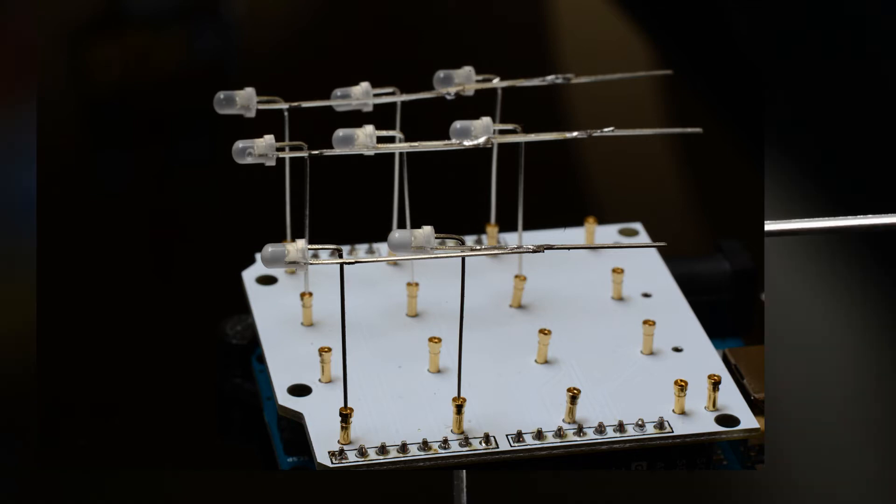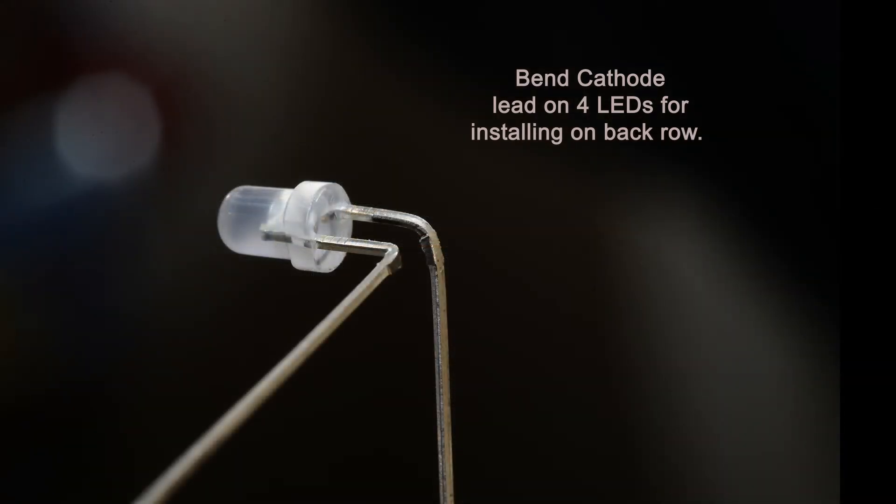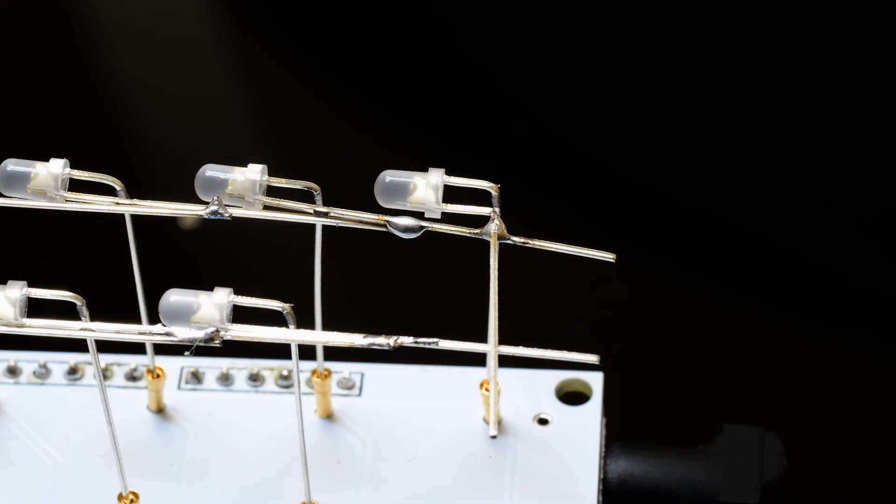Now we need to add bends to the cathodes of four LEDs for the back row. Bend the cathode as shown so that it can be attached to the other cathodes along the same layer. Here is the first layer with the back corner LED installed.